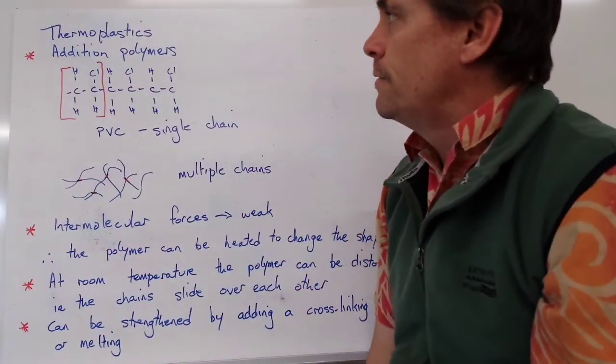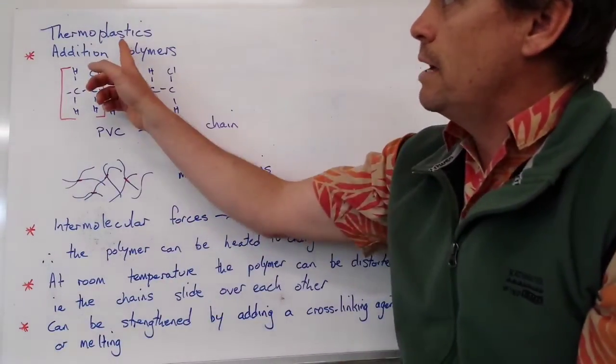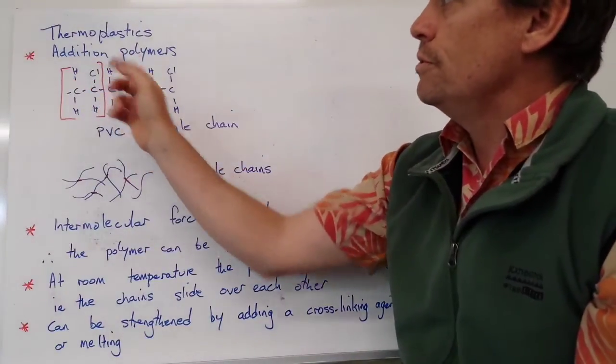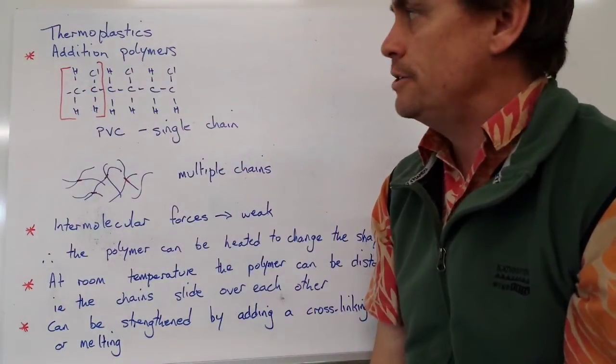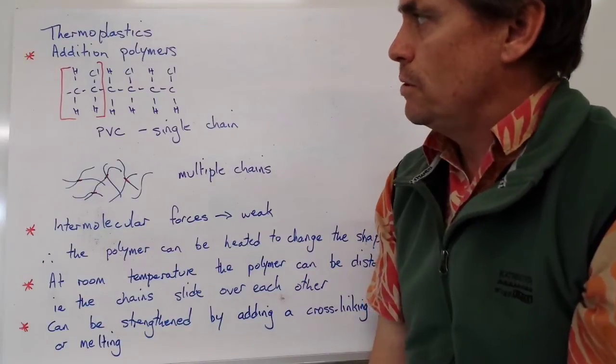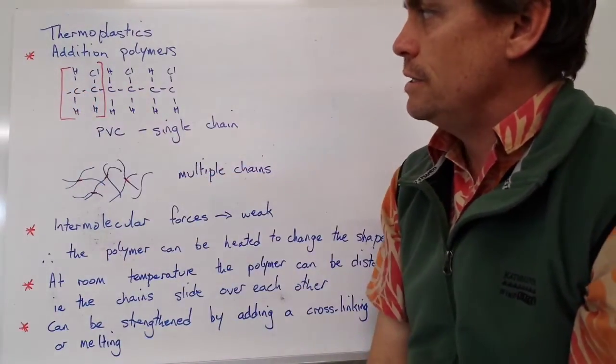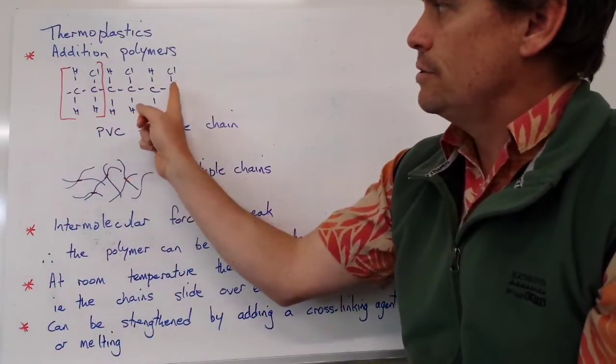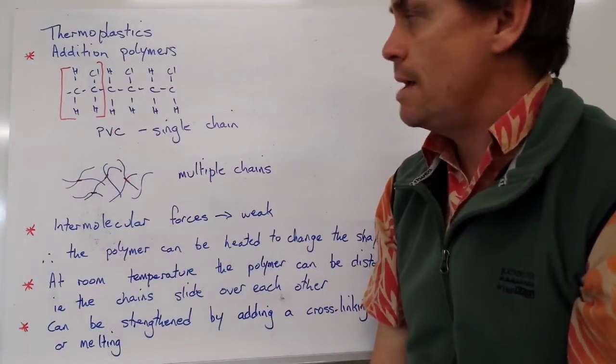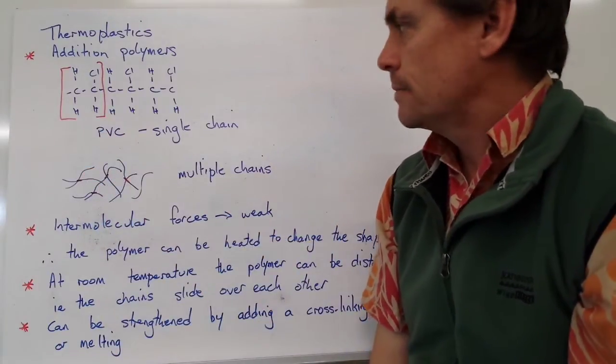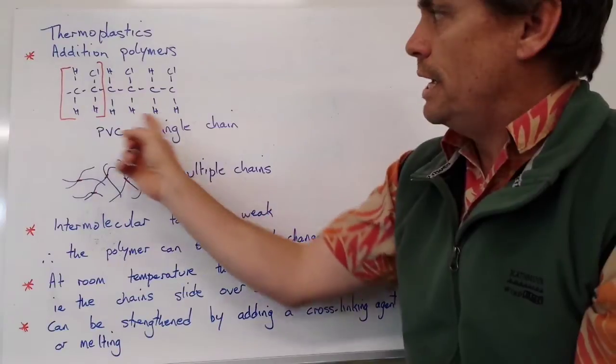Our first group of polymers are thermoplastics. In general, these are formed through the process of addition polymerization. We have an example here where the monomer unit is chloroethene. If we polymerize that into my example here, which is a trimer, we form the molecule polyvinyl chloride. This is a single chain.